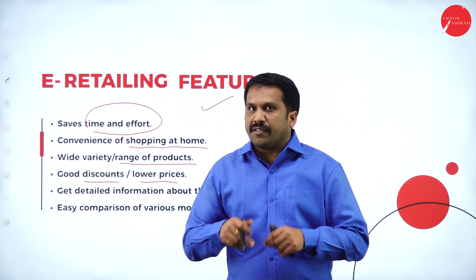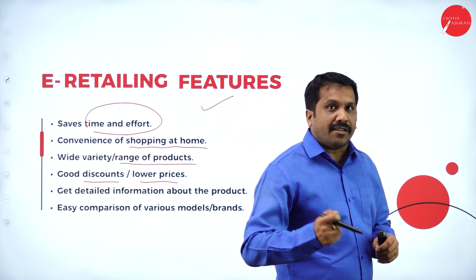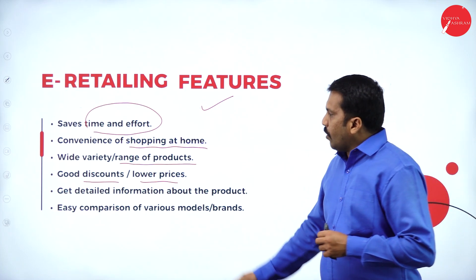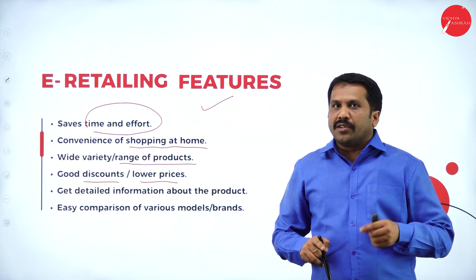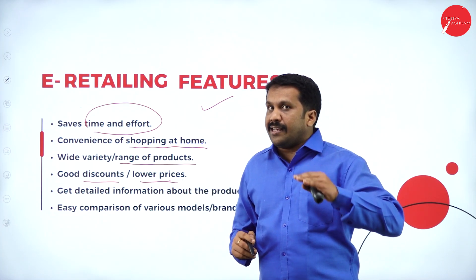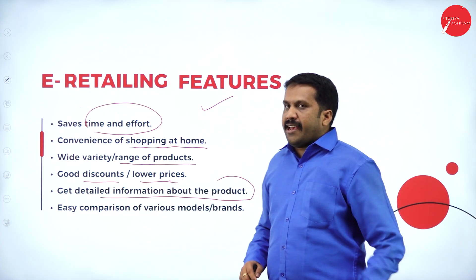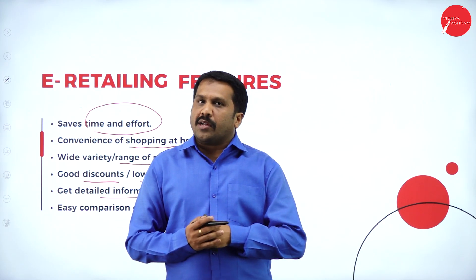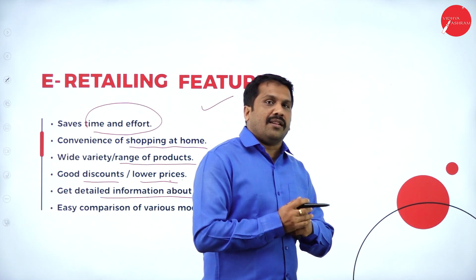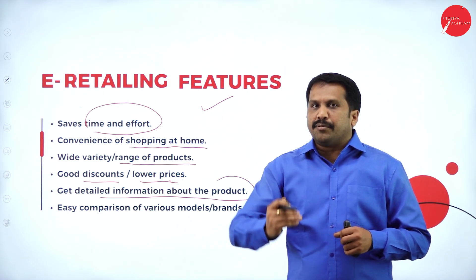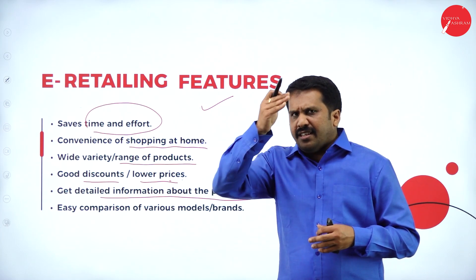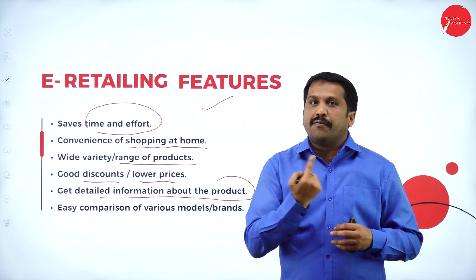The reason for lower online prices is that offline sellers have to pay shop rent, electricity bill, salaries for workers, property tax, and transportation expenses. But online, it is just a website — no salary, no rent, no electricity bill. That is why products are always available at lesser prices online. You also get detailed information about the product. If a shop owner is busy or unaware, he will not guide you. Online, you get a video, reviews, full description, model details, best price, warranty information — a complete 360-degree view of variants, colors, and sizes.